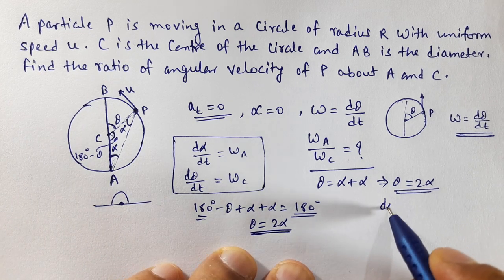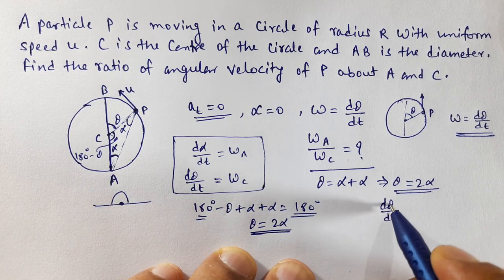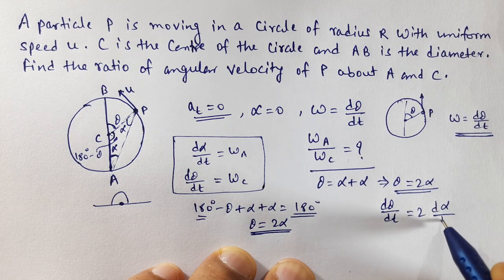Now differentiate with respect to time. So dθ/dt = 2 dα/dt.